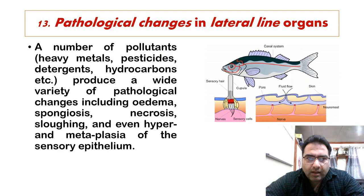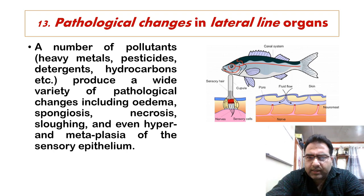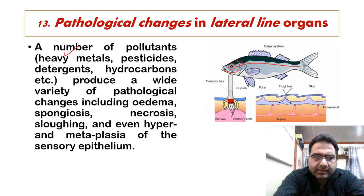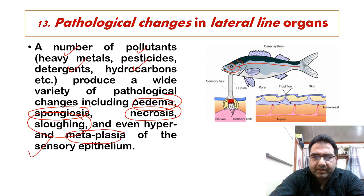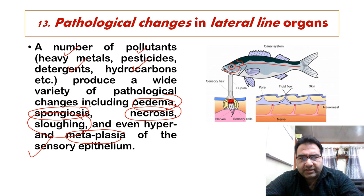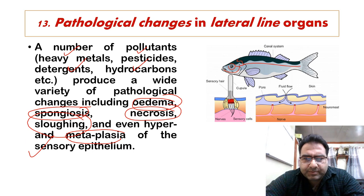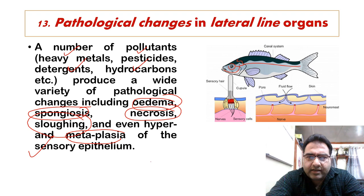We also have pathological changes in the lateral line organs, which are important sense organs in fishes. A number of pollutants such as heavy metals, pesticides, detergents, and hydrocarbons produce a wide variety of pathological changes including edema, spongiosis, necrosis, sloughing, and even hyperplasia and metaplasia of the sensory epithelium — all leading to changes in the lateral line organs.